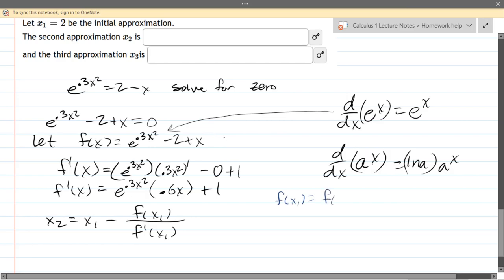So our x1 in this problem is the number 2. And that is e to the 0.3 times 2 squared minus 2 plus x, which is 2. And all I did was just plug in right here. Wherever I saw x, I put in a 2.